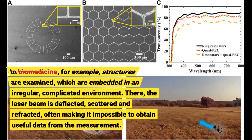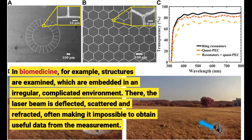In biomedicine, for example, structures are examined which are embedded in an irregular, complicated environment. There, the laser beam is deflected, scattered and refracted, often making it impossible to obtain useful data from the measurement.